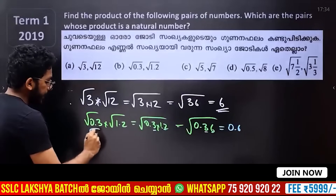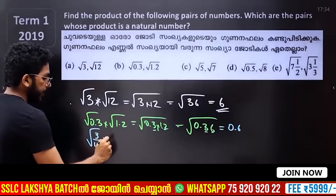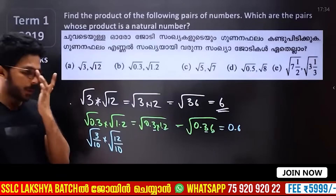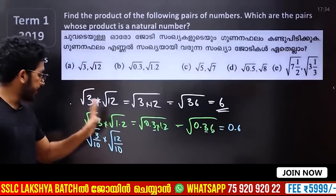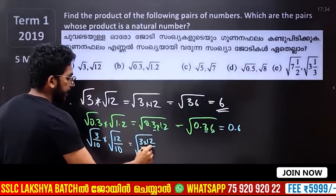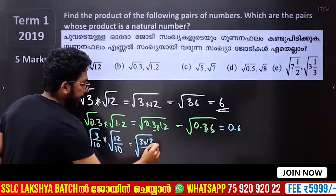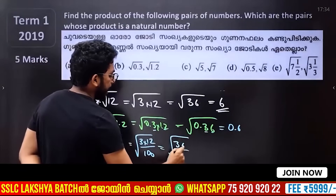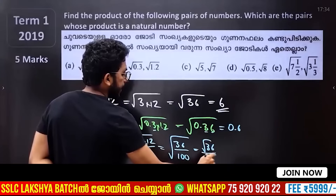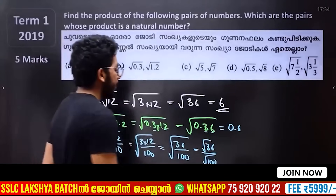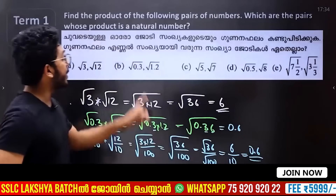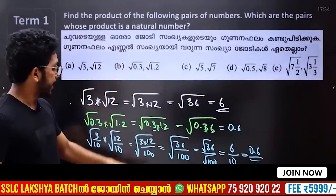Point 3 is 3 by 10, and 1.2 is 12 by 10. So we have 3 into 12 divided by 100 — that is 36 divided by 100. Root of 36 over 100 is 6 divided by 10, which is 0.6. This is not a natural number.